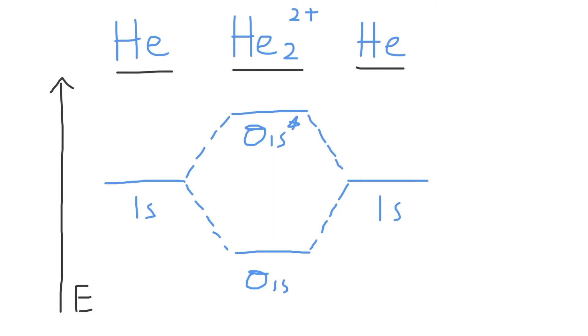Now we need to fill in our molecular orbital diagram with electrons. So we need to figure out how many valence electrons each helium atom has. Normally, helium would have two valence electrons. However, we are trying to make the 2+ ion. So we need to combine two He+ cations.